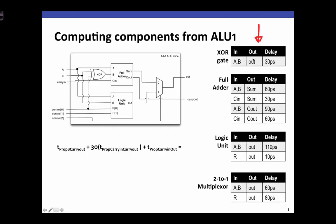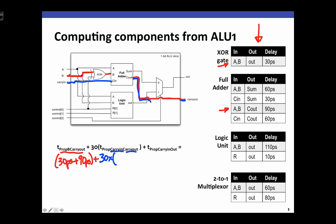Given assumptions about the propagation delays of the individual components, we can compute the delays for the 32-bit adder. From B to carry out, there is a single path through the XOR gate with a latency of 30 picoseconds, and through the full adder from the B input to the carry out output for a latency of 90 picoseconds. We then have 30 times the latency of propagating carry in to carry out, which goes through the full adder from the carry in input to carry out for a latency of 60 picoseconds.